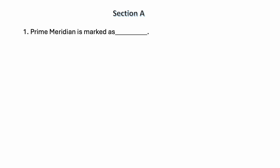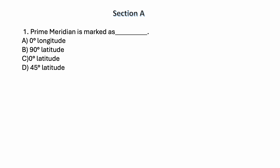Section A MCQs. Prime meridian is marked as — options are: 0 degree longitude, 90 degree latitude, 0 degree latitude, 45 degree latitude. The correct answer is 0 degree longitude.